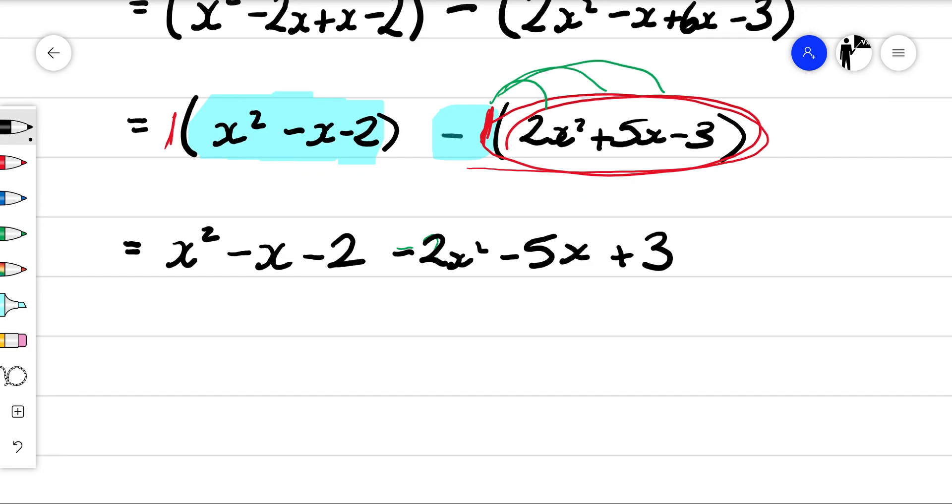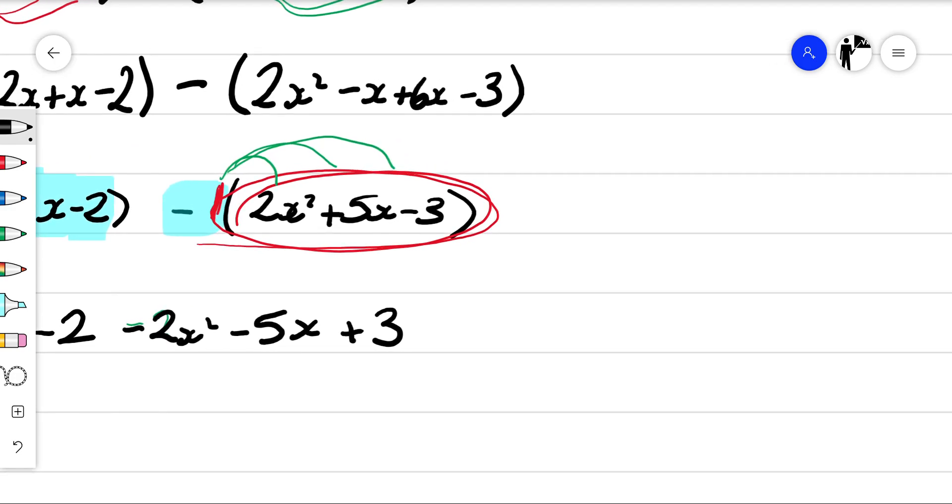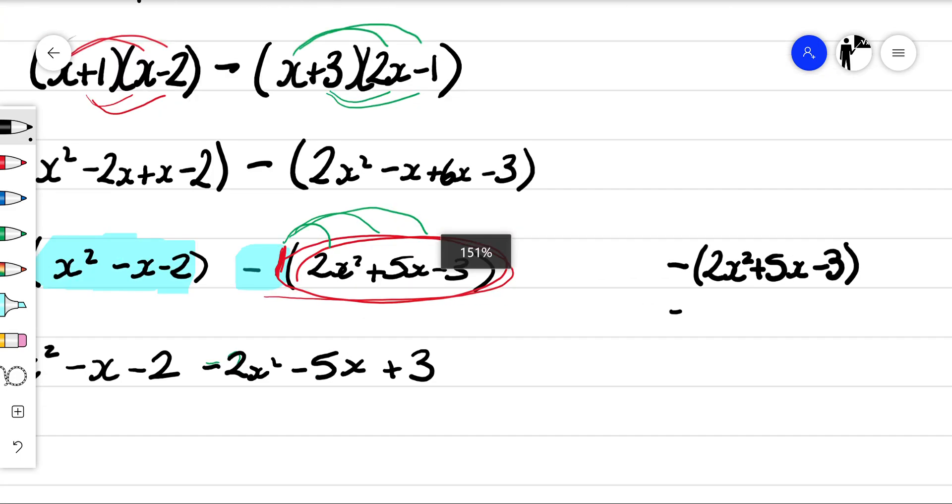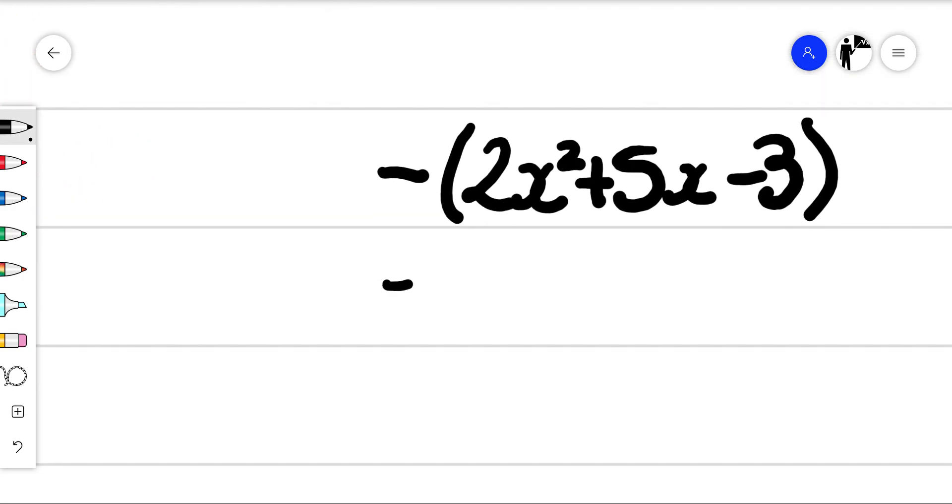So notice here, I'm just going to zoom in on what we just did there. So this was our bracket, 2x squared plus 5x minus 3. So if when we're subtracting that, because we're subtracting the full thing, that would become minus 2x squared minus 5x plus 3.